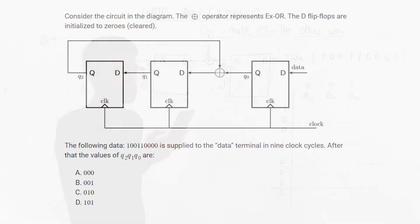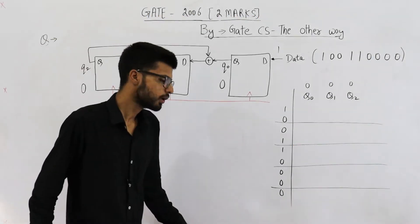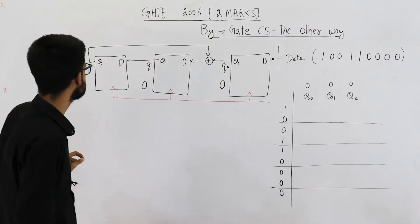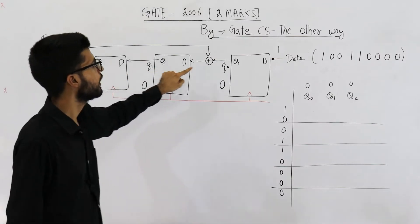Consider the circuit diagram. This operator represents XOR. The D flip-flops are initialized to zeros — that is, they are cleared. The following data is supplied to the data terminal in nine clock cycles. After that, the values of Q2, Q1, Q0 are asked. You can see they have given a counter and are asking: after the ninth clock cycle, what will be the state of the counter — what will be the value of Q2, Q1, and Q0?